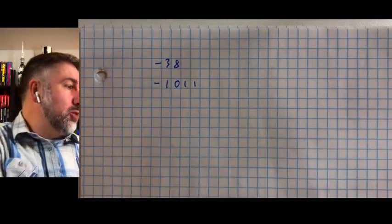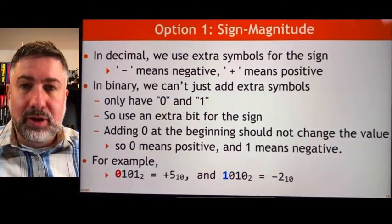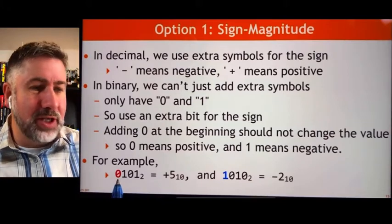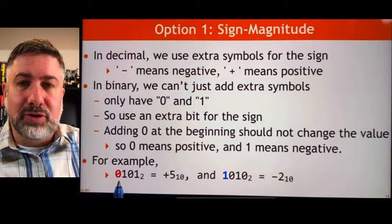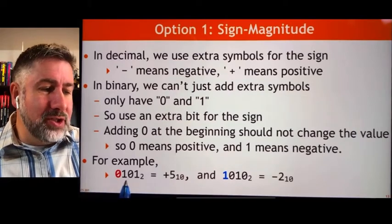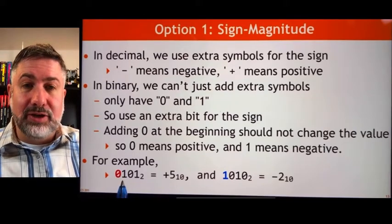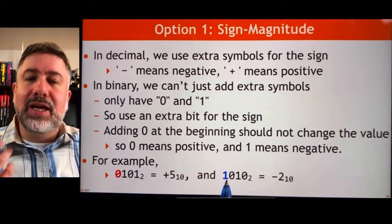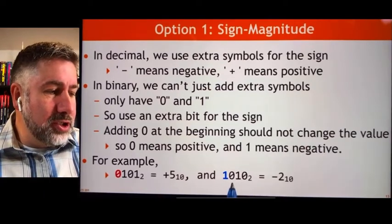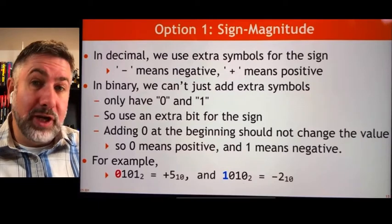So we invent a system called sign magnitude. Instead of a negative symbol, we use another bit and treat it as if it were a negative symbol. We add a new bit at the very front of the representation: if that bit is zero, it corresponds to a positive number; if that bit is one, it corresponds to a negative number. We already have the situation where adding zeros in front of a number doesn't change its value, so we add a zero in front for positive and a one in front for negative.